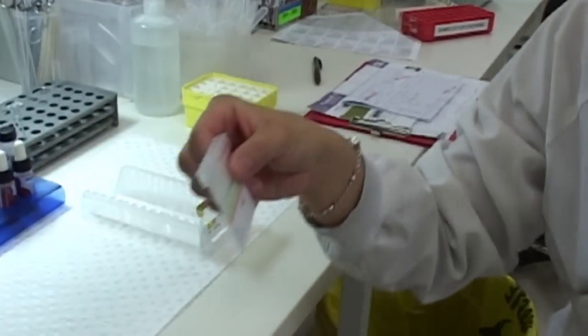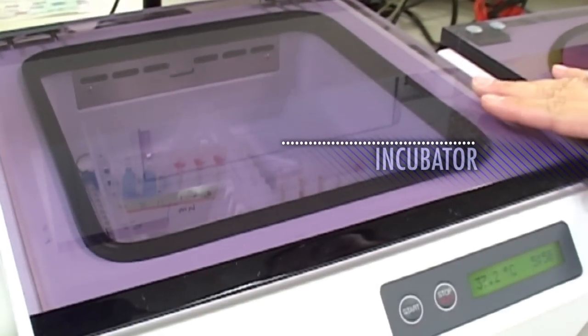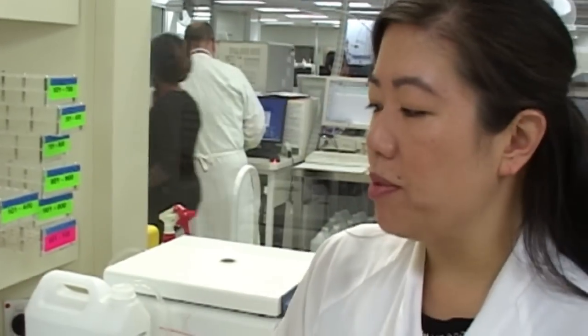So this is now ready for incubation. We're going to put it in the incubator. This incubation period is for 15 minutes. It heats it up to 37 degrees and that's your normal body temperature. After that we spin it down and then basically the reagents will tell us whether or not the patient's got an antibody.